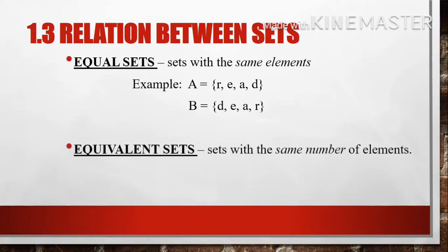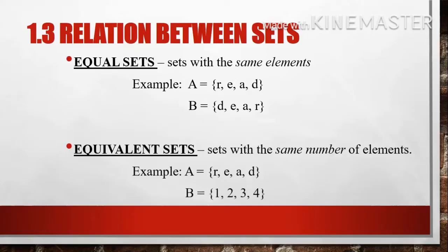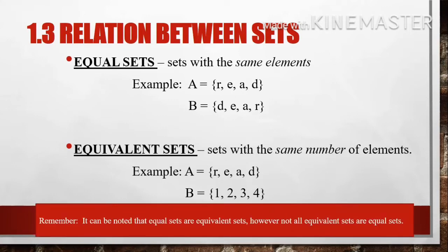The second relation between sets is equivalent sets — sets with the same number of elements. Example: set A whose elements are R, E, A, D, and set B whose elements are 1, 2, 3, and 4. We are just after the number of elements. If the given sets have the same number of elements, they are equivalent sets. Remember, equal sets are equivalent sets, but not all equivalent sets are equal sets.